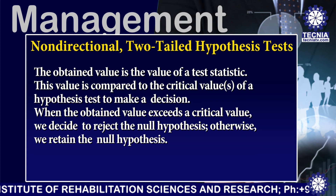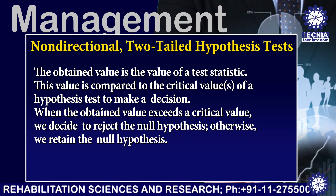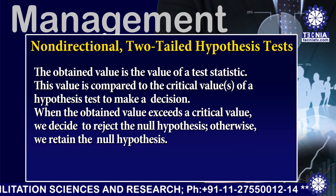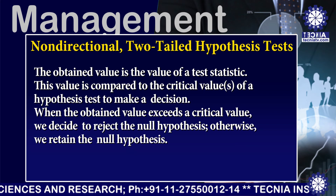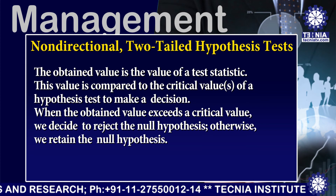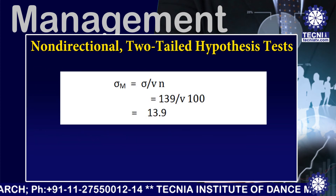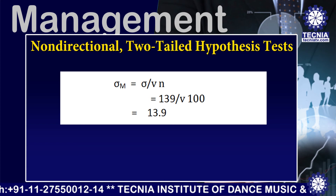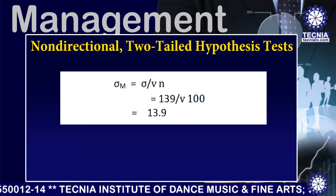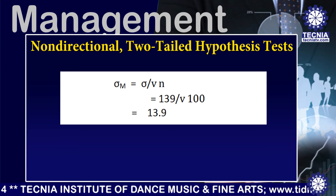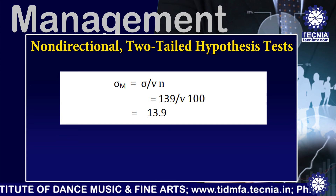When the obtained value exceeds a critical value, we decide to reject the null hypothesis; otherwise, we retain the null hypothesis. To calculate sigma_m = sigma / sqrt(N), with sigma = 139 and N = 100, the value of sigma_m equals 13.9.